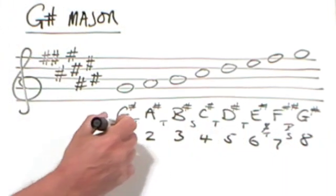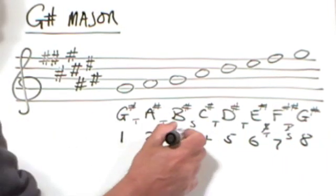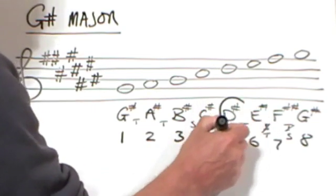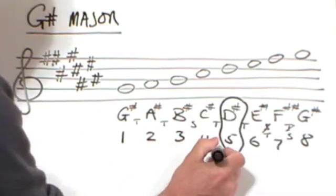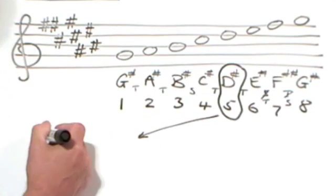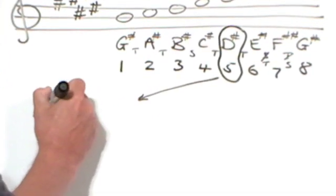Now we're in a circle of fifths, so we count one, two, three, four, five, take that fifth note, and that becomes our next key in the sequence, D sharp major.